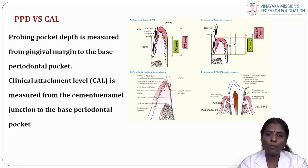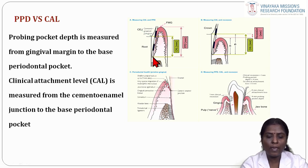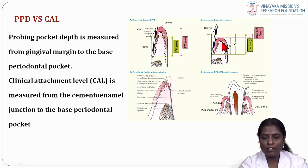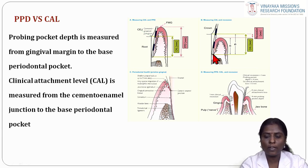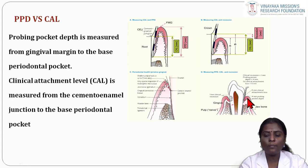There is an important difference between probing pocket depth and clinical attachment level. PPD is measured from the gingival margin to the base of the pocket. Clinical attachment level (CAL) is measured from the cementoenamel junction to the base of the pocket. In recession, CAL = distance from CEJ to gingival margin + probing pocket depth. For example, if the gingival margin to base of pocket is 4 mm and CEJ to gingival margin is 1 mm, then CAL = 5 mm.